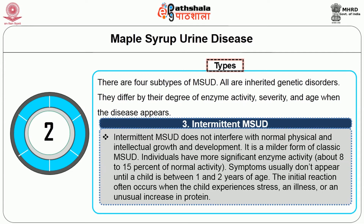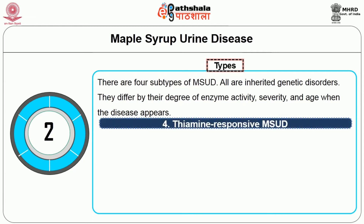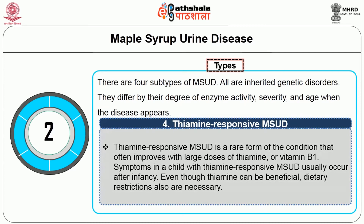Symptoms of Intermittent MSUD usually don't appear until a child is between 1 and 2 years of age. The initial reaction often occurs when the child experiences stress, illness, or an unusual increase in protein. The fourth type is Thiamine Responsive MSUD, a rare form that often improves with large doses of thiamine or vitamin B1. Symptoms usually occur after infancy, and even though thiamine can be beneficial, dietary restrictions are also necessary.